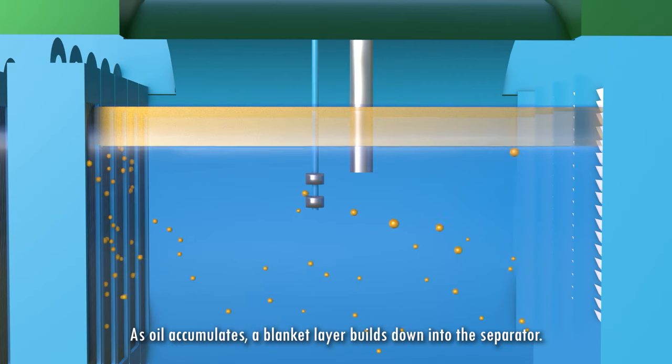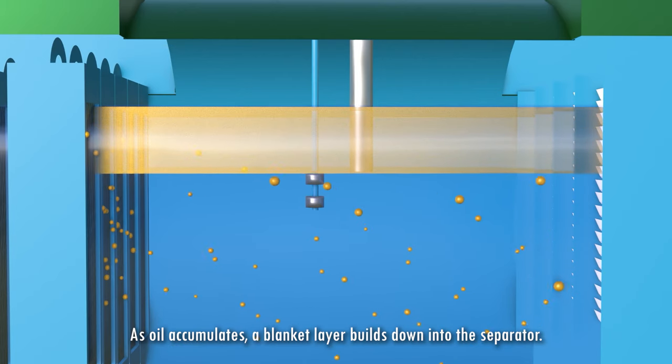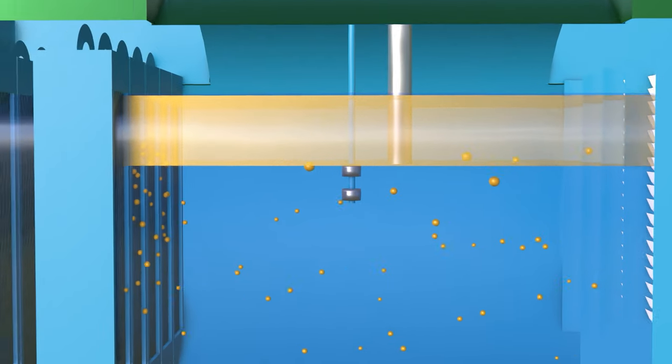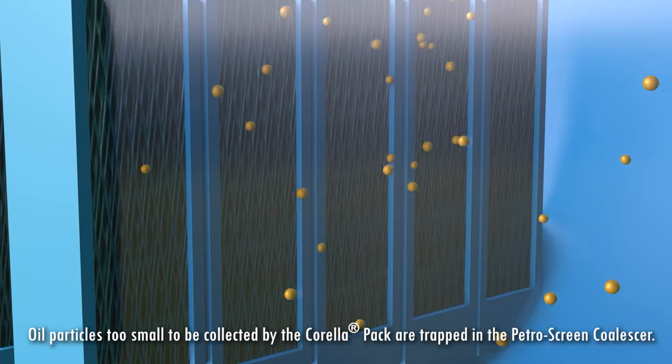As we move through, we have a secondary coalescer which is a polypropylene mesh material that's attracting small oil droplets to the mesh and it's coalescing and floating to the top of the water.